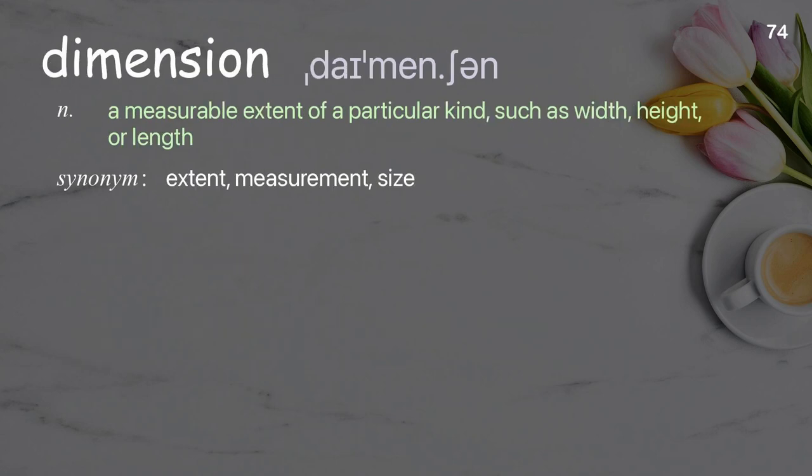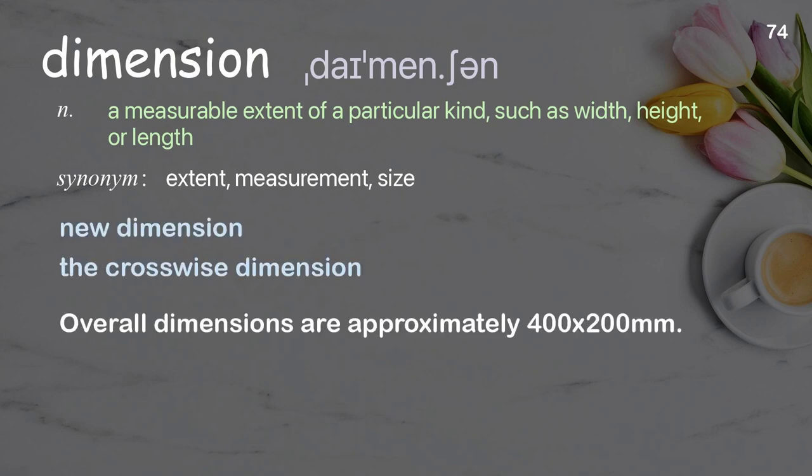Dimension: a measurable extent of a particular kind, such as width, height, or length. Examples: new dimension, the crosswise dimension. Overall dimensions are approximately 400 by 200 millimeters.